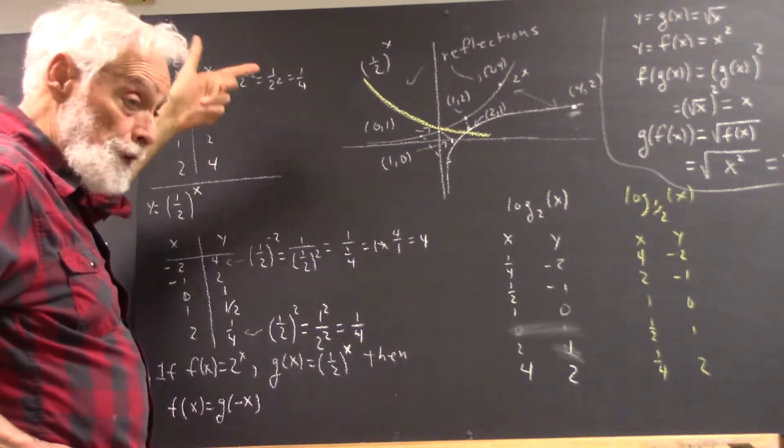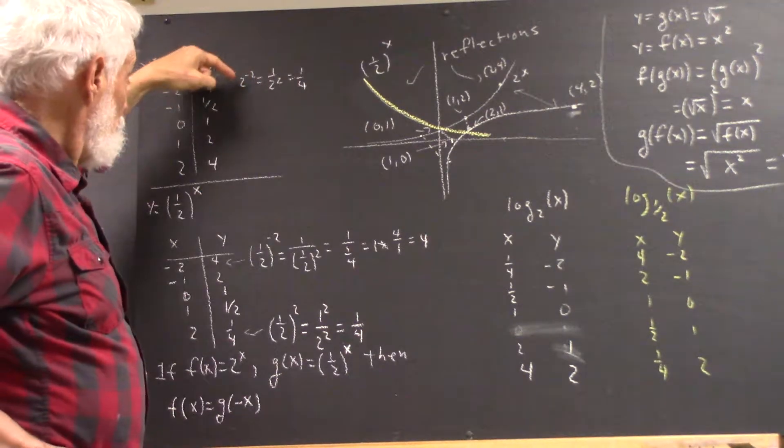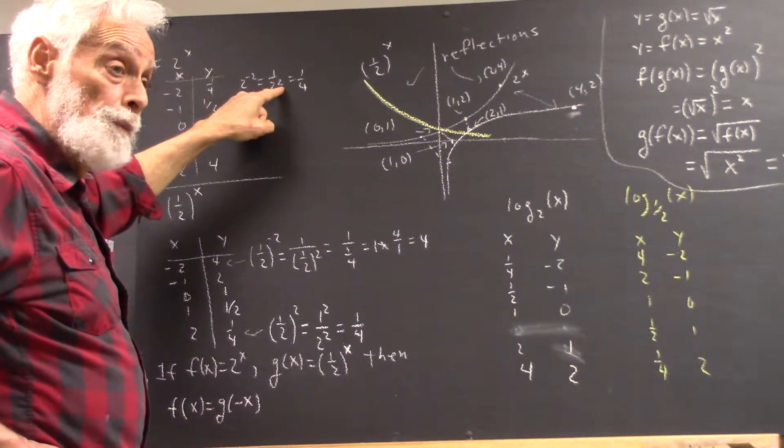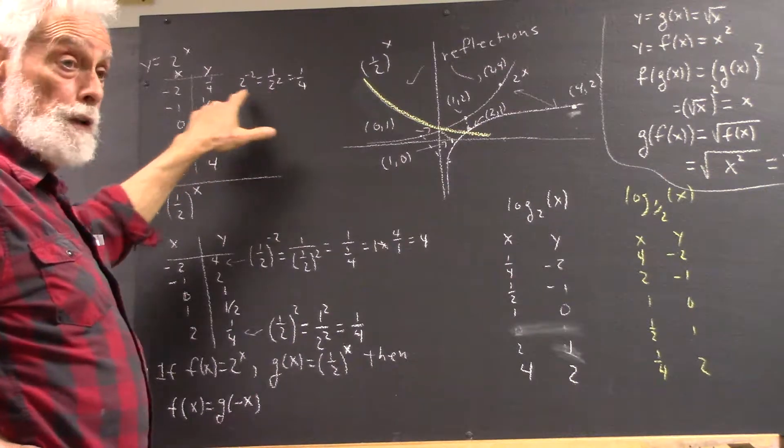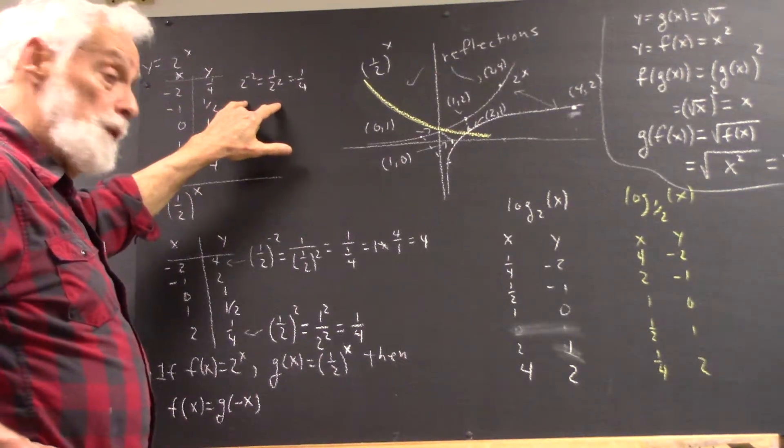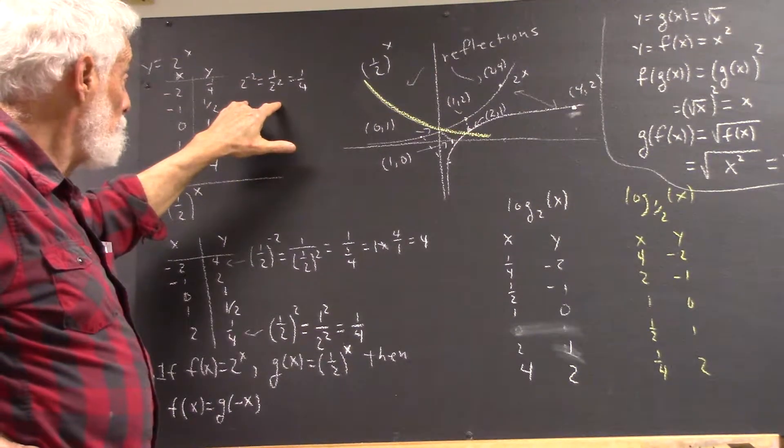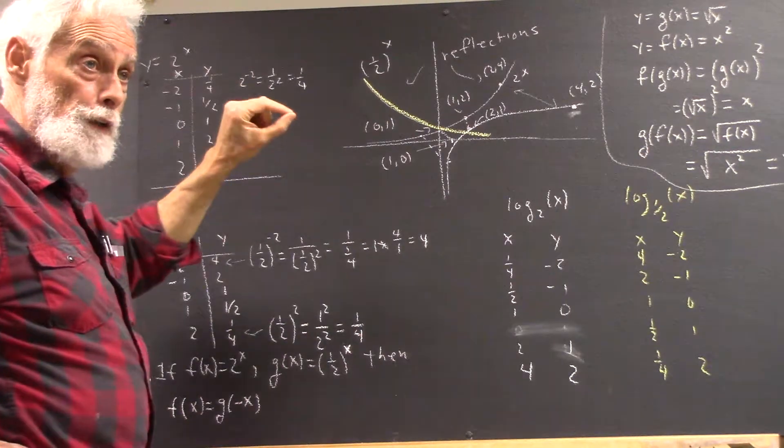2 to the negative 2, because of this law, means 1 over 2 squared. Now, that's not a particularly difficult thing to see and to apply, but you've got to remember. You've got to know that's what a negative exponent means.